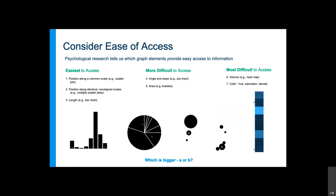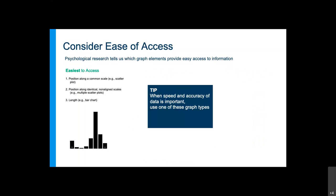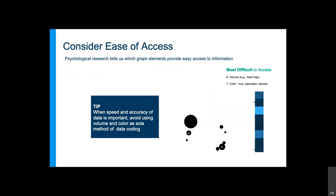What the psychologists found is that graphs that represent data with length and put those data points along an identical common scale are the easiest and most accurate to read. As you go from left to right, graphs that use angle or circle shape to represent data are harder to read. The hardest graphs are ones that use volume like heat maps or color and hue.